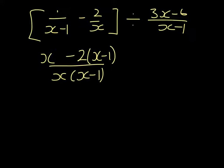You can do this in different stages, I'm going to do it all in one. The division becomes a multiply, and we multiply by the reciprocal. So we invert the fraction, and we factorise 3x minus 6, which is 3 upon x minus 2.